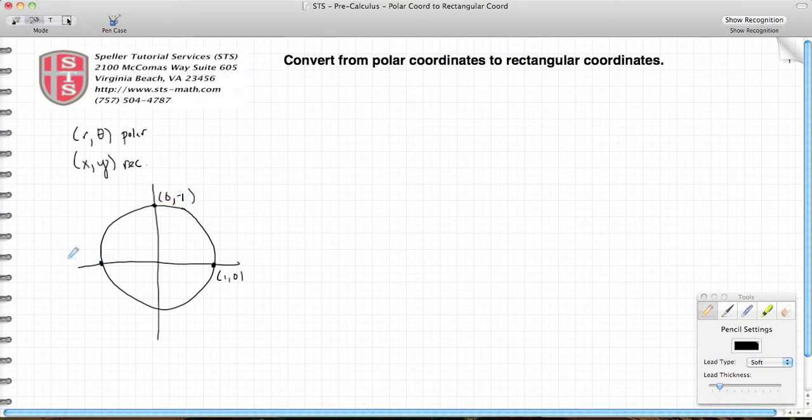And down here the coordinates are (0, -1). As we move around the circle, we start here at 0 degrees. This would be 90 degrees, 180 degrees.